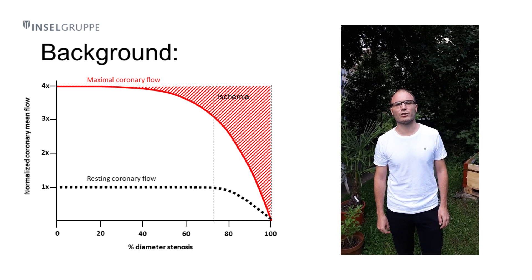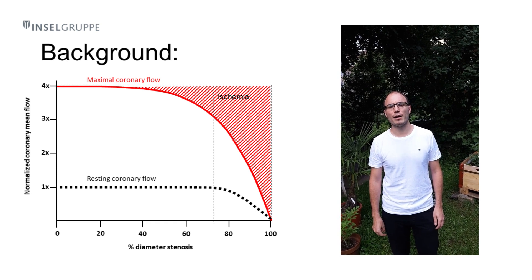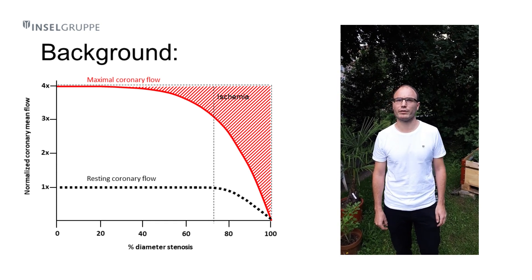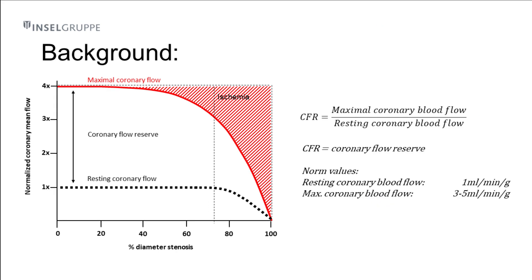This key feature of coronary resistance and thus, myocardial perfusion, normally allows a 4-5-fold blood flow increase, also called coronary flow reserve. In patients with coronary lesions, compensatory vasodilatation preserves adequate perfusion at the expense of decreased flow reserve.